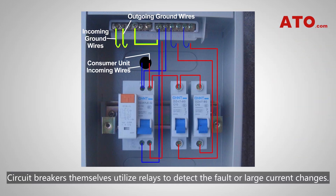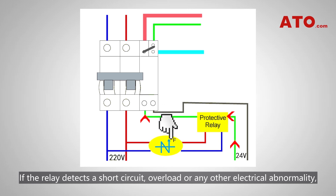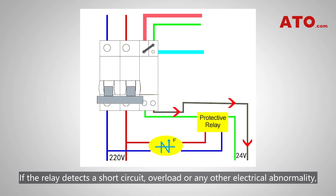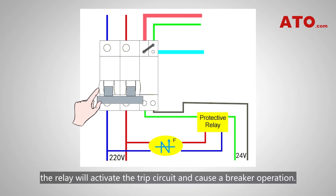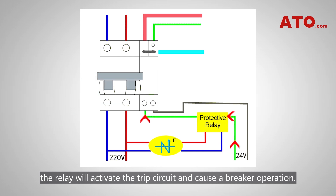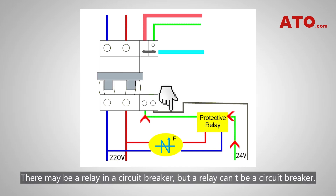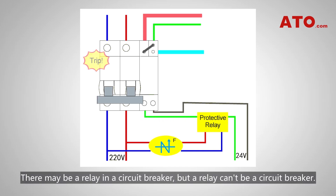Circuit breakers themselves utilize relays to detect the fault or large current changes. If the relay detects a short circuit, overload, or any other electrical abnormality, the relay will activate the trip circuit and cause a breaker operation. There may be a relay in a circuit breaker, but a relay can also be a circuit breaker.